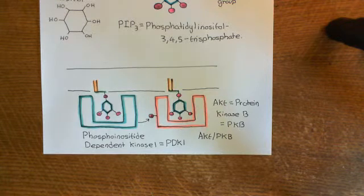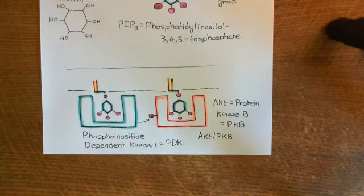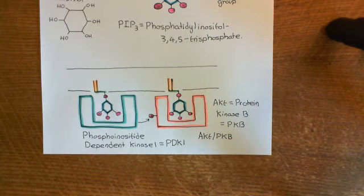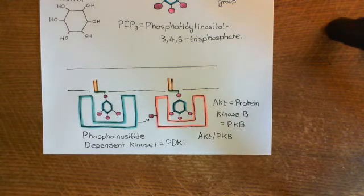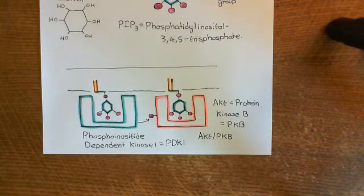Now it's going to go on to have downstream effects. Overall, we can summarise: activation of the interleukin-2 receptor has led to the activation of the AKT enzyme — protein kinase B — and that is now what's going to cause the downstream effects.